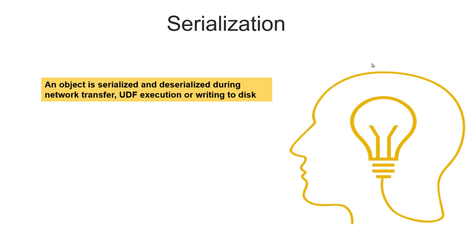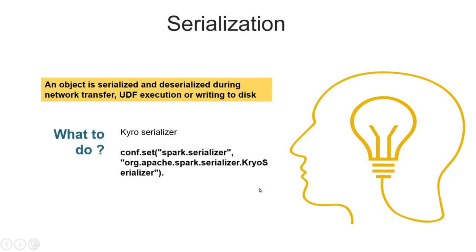The next topic is serialization. Whenever we try to store an object or do a network transfer of data, serialization or deserialization takes place. This also occurs when writing UDFs, because when we write a UDF or custom code, Spark has to read each row of the dataset, deserialize it, apply the lambda function, and then serialize it again. This deserialization-serialization cycle happens many times, so the recommended serializer is the Kryo serializer. We can set a property in our Spark conf to specify Kryo, as by default the Java serializer is used. Kryo is almost 10 times more efficient, so we need to explicitly set it.